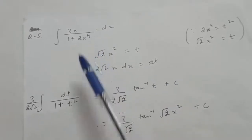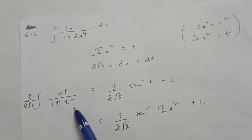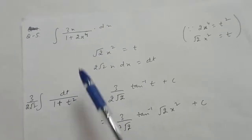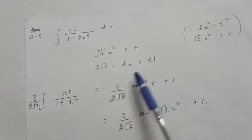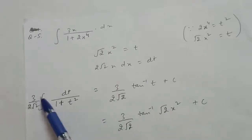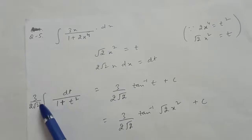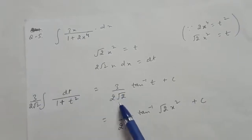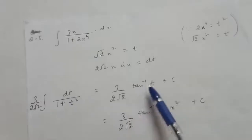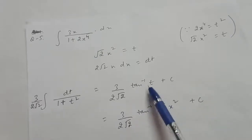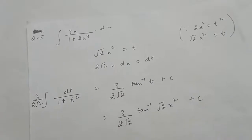The integral becomes 3/(2√2) times integral of 1/(1 + t²) dt, which gives 3/(2√2) times tan⁻¹(t) plus c. In place of t substitute back √2·x².